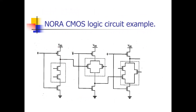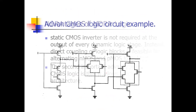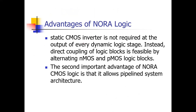In NORA logic, the inverter is not shown between stages because direct coupling occurs — the output of the first stage goes directly to the input of the second. Note that for NMOS output is at the top of the NMOS transistor, while for PMOS the output is at the bottom. The advantage of NORA logic is that a static CMOS inverter is not required at the output of every stage. Direct coupling happens, and it allows a pipelined system architecture. Thank you so much — keep learning, keep sharing, God bless you.